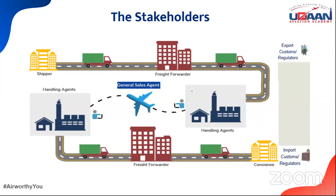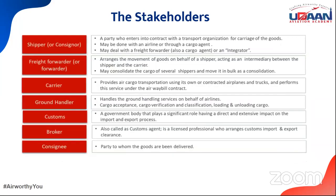Each stakeholder has a specific responsibility toward smooth transportation of goods. The shipper and consignee enter into a contract. An agent normally comes in only when you need to transport the goods. The deal for moving cargo from point A to point B is between the shipper and the consignee — they decide which airline and which agent is involved and appoint a freight forwarder or IATA agent. A freight forwarder, as the name suggests, is the one forwarding the cargo.